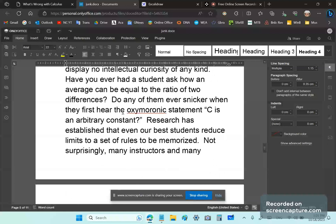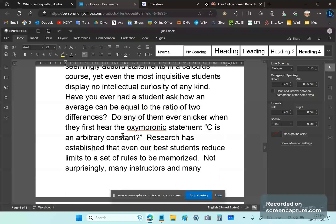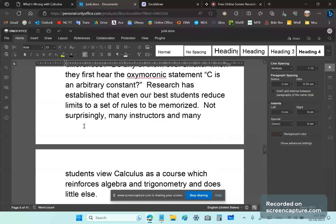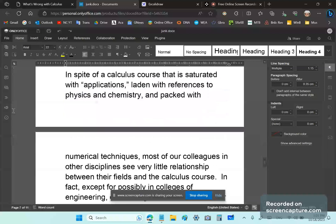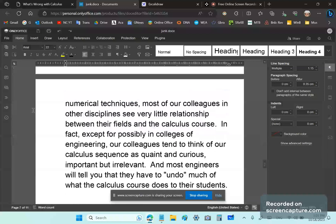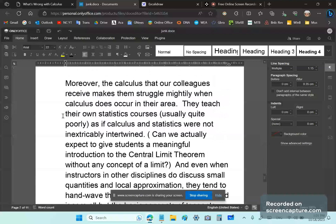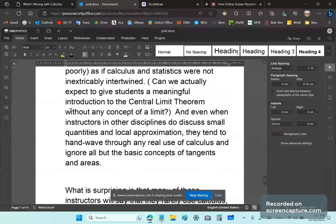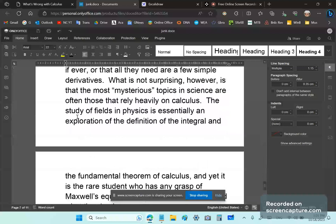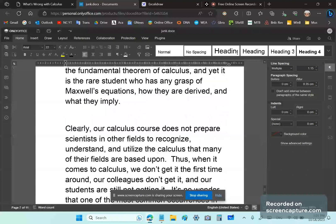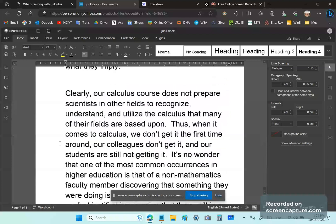So do read this. He says do any of them ever snicker when they first hear the oxymoronic statement, C is an arbitrary constant. I mean, research has established that even our best students reduce limits to a set of rules to be memorized. So he writes an interesting article, and it's not without error, by the way. He does have some wrong ideas. And I know that I picked this up when I was communicating with him in my emails. Of course, there was no convincing him. You can't convince somebody who believes in things and believes he is right, and there is no other way to explain something.